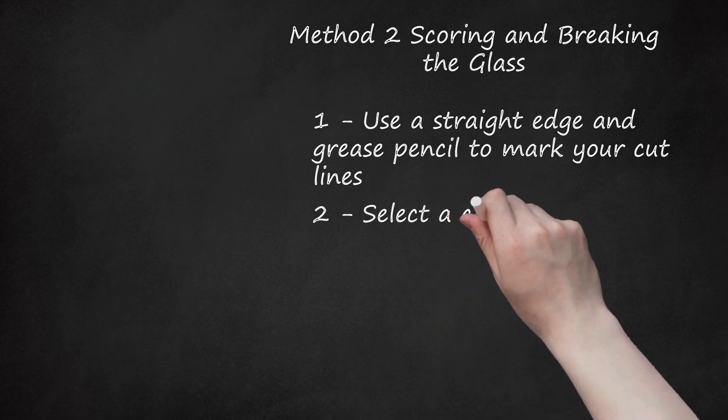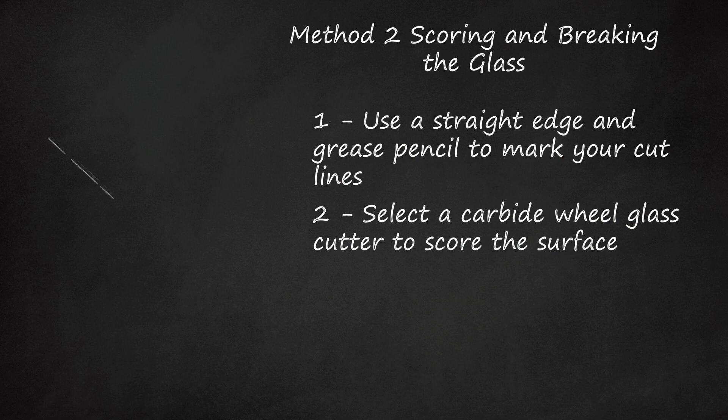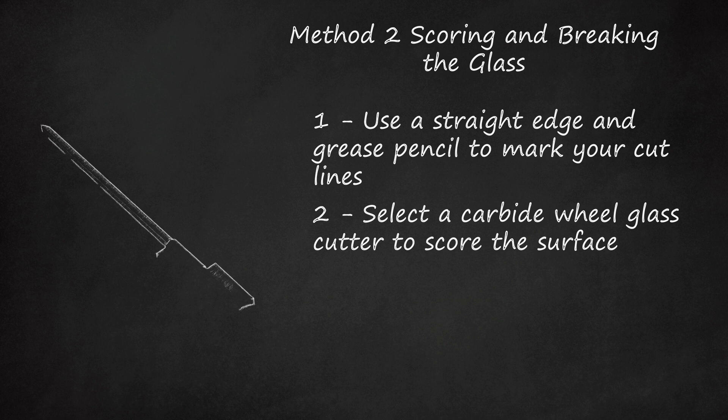Select a carbide wheel glass cutter to score the surface. A glass cutter, also known as a scoring tool, does not break the glass. Instead, it scratches a line into the surface of the glass, weakening it. Once the glass is scored, you can then break it cleanly along the score line.